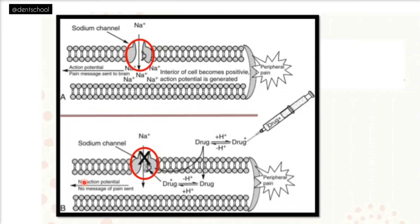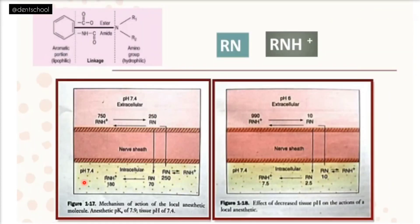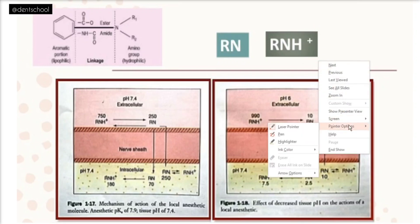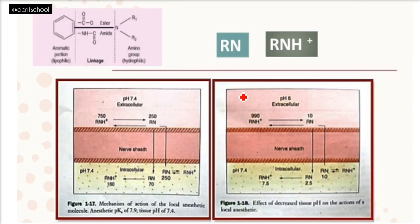This prevents excitation along the neural pathway and gives rise to anesthesia. Local anesthetics are weak bases, so they exist in two forms in equilibrium: RN and RNH+. RN is the uncharged, deionized, active free base form, which is lipid soluble. RNH+ is the charged or ionized form, which is not lipid soluble.